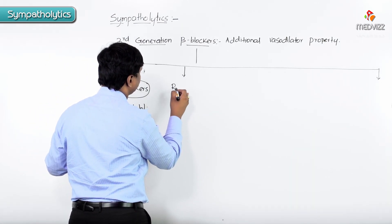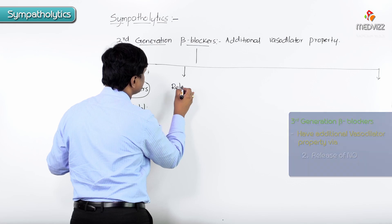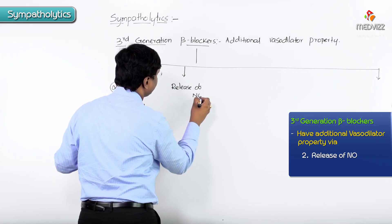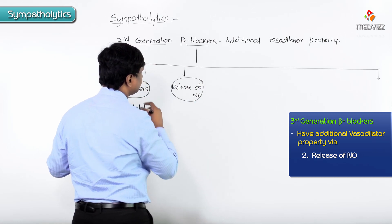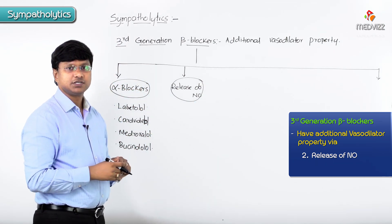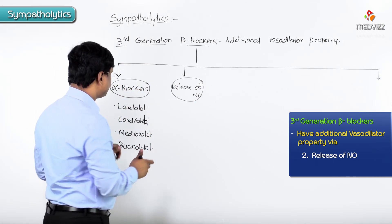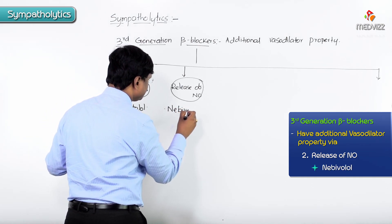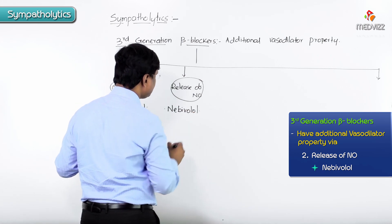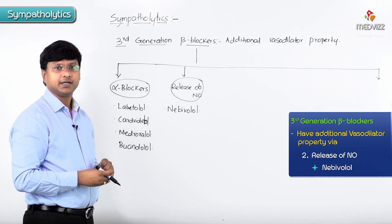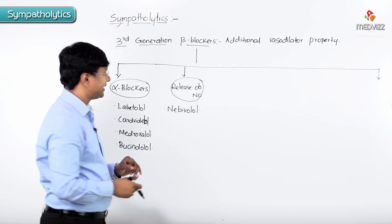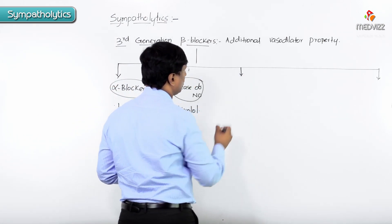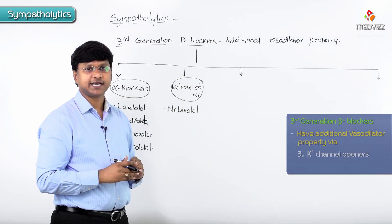Next, we have third generation beta blockers which cause the release of nitric oxide. The drug in this group is nebivolol.